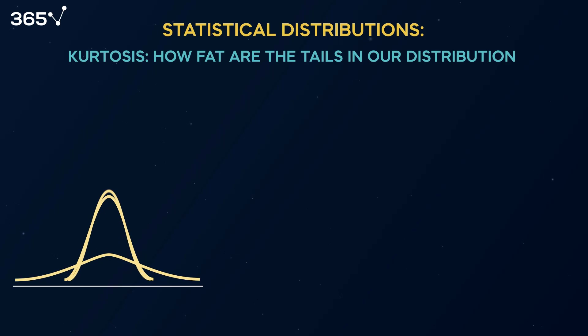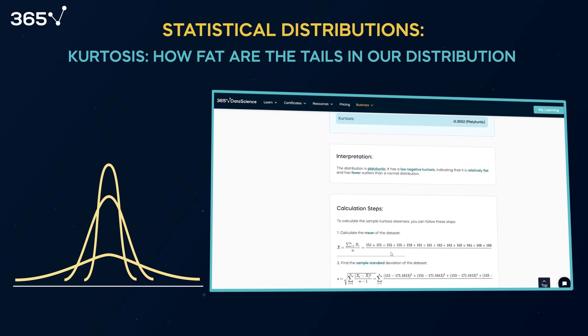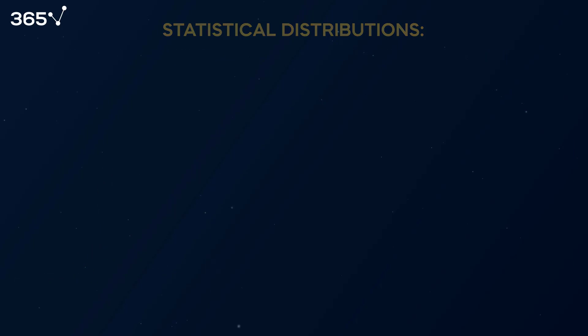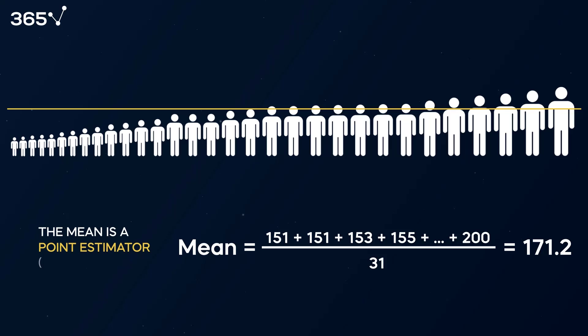Kurtosis is a metric that tells us how fat the tails are of our distribution. Once the teacher has calculated the mean height of the students in her class, she can form an expectation regarding how tall, on average, the students in her class are. The mean is a single number, hence a point estimator.